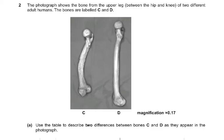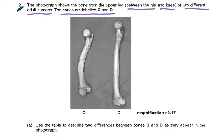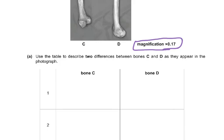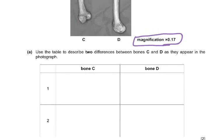Starting with question 2: the photograph shows bones from the upper leg between the hip and the knee of two different adult humans, labeled C and D. The magnification given is 0.17. Use the table to describe two differences between bone C and bone D.